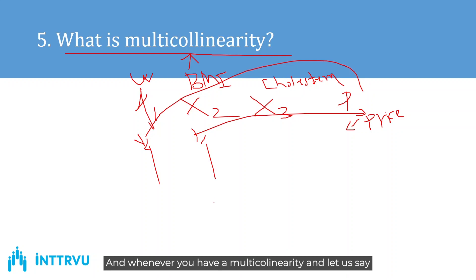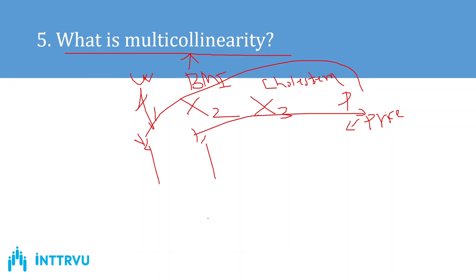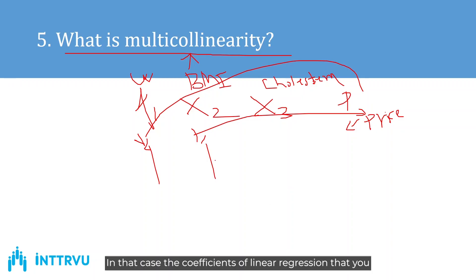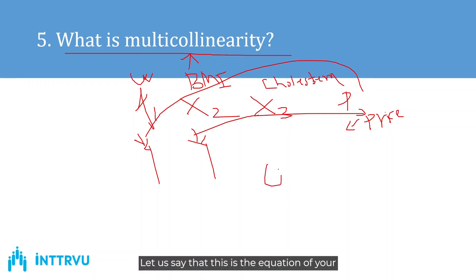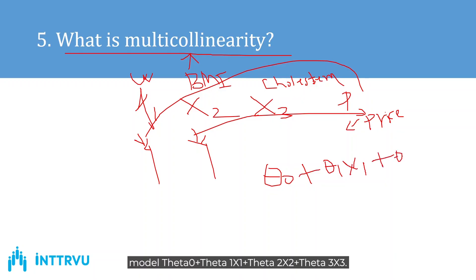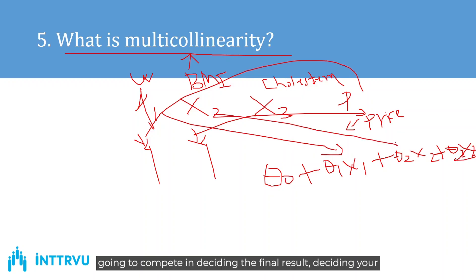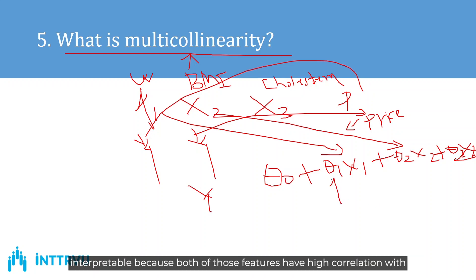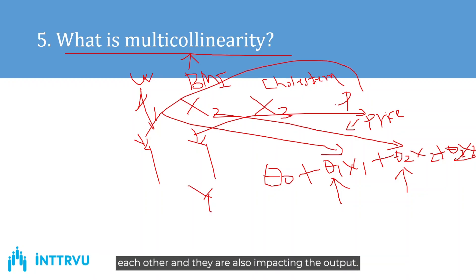When you have multicollinearity and build a linear regression model, the coefficients you get won't be interpretable. In the equation θ₀ + θ₁x₁ + θ₂x₂ + θ₃x₃, features x1 and x2 compete in deciding the final output y. The theta values won't remain interpretable because both features have high correlation with each other and are also impacting the output. This scenario is called multicollinearity.